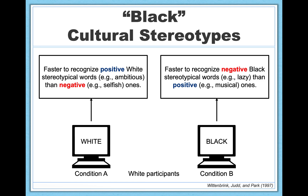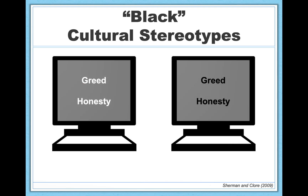The black prime, however, did the opposite. It facilitated participants' recognition of negative words, like lazy, compared to positive, like musical — black stereotypical words. The magnitude of this implicit prejudice effect correlated reliably with participant scores on explicit racial attitude measures as well, indicating that people's spontaneous stereotypic associations are consistent with their more controlled, explicit responses. So this is obviously disheartening.